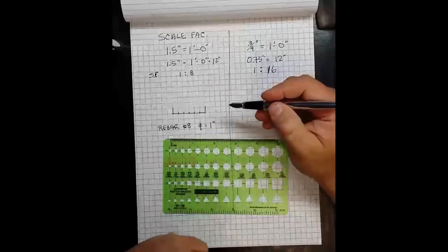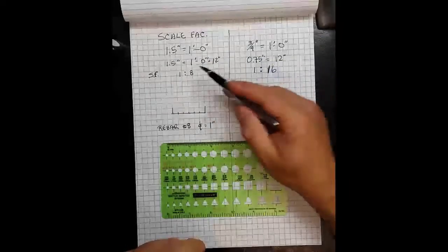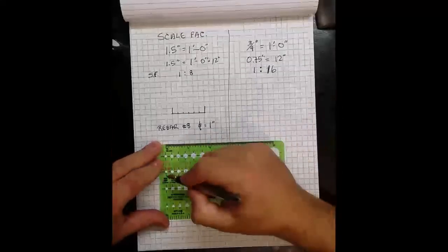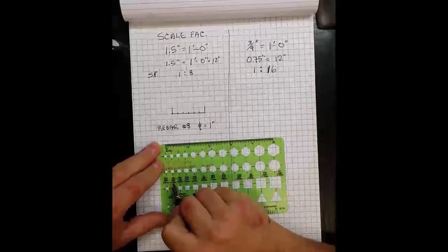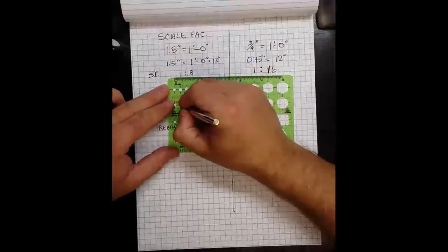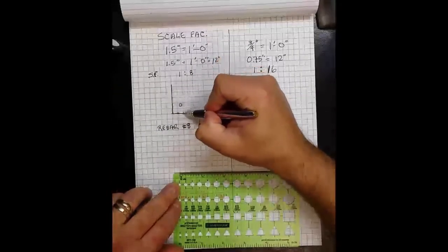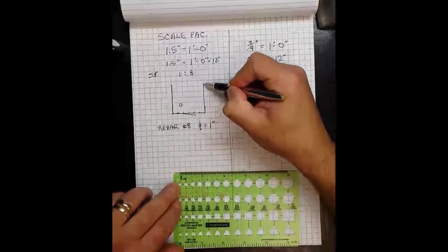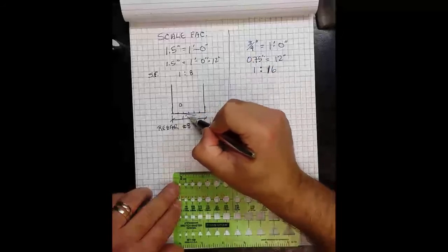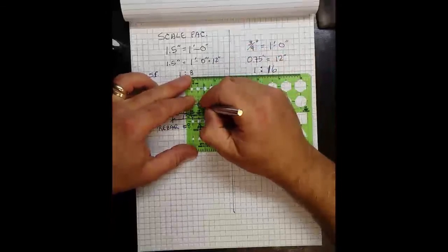And so what size circle am I going to draw at inch and a half scale? Well, that's simply going to be one-eighth inch. And so I'm going to come over here and select one-eighth and draw in the rebar. So what I have shown here, this could be a grade beam that is one foot wide and rebar at the lower corner of each member.